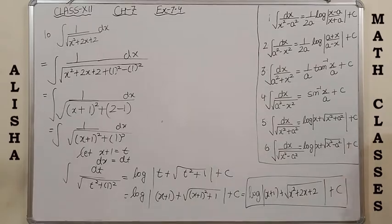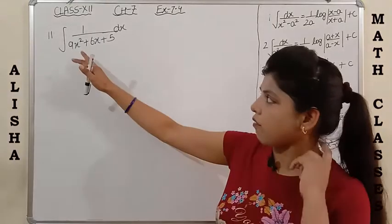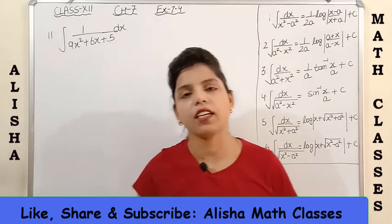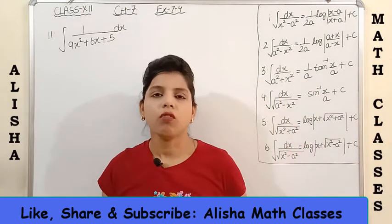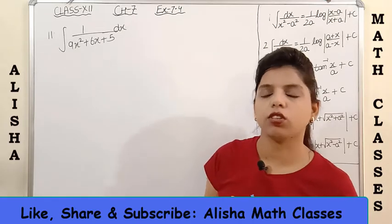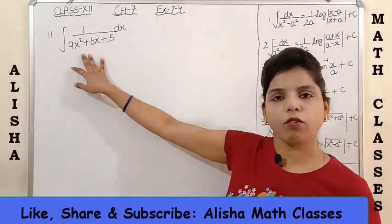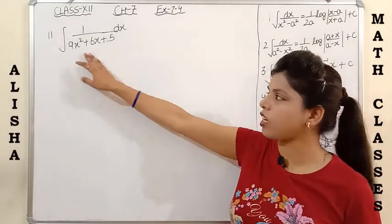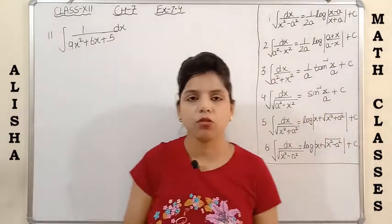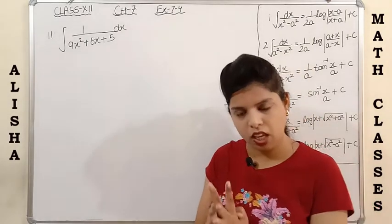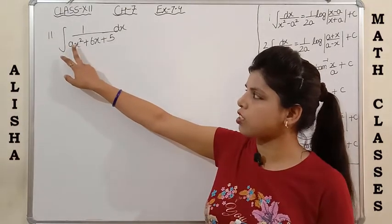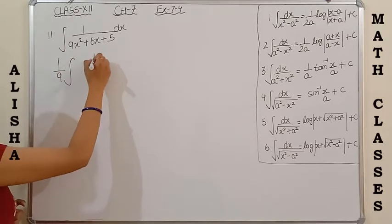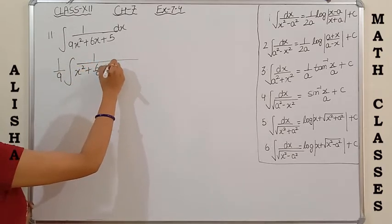Question 11: integrate 1/(9x² + 6x + 5). We have a quadratic equation in the denominator. The coefficient of x² is 9, so we take 9 as common. After taking 9 common, we get (1/9) times 1/(x² + (6/9)x + 5/9), which simplifies to 1/(x² + (2/3)x + 5/9). The coefficient of x is 2/3, so half of 2/3 is 1/3 — we add and subtract (1/3)².